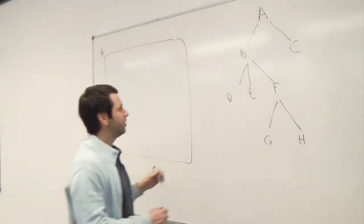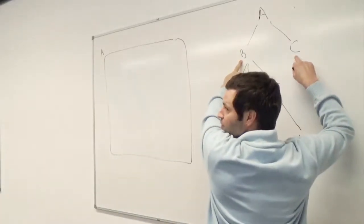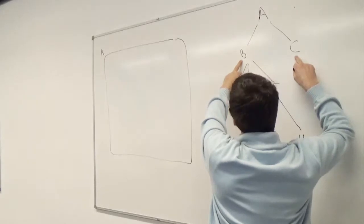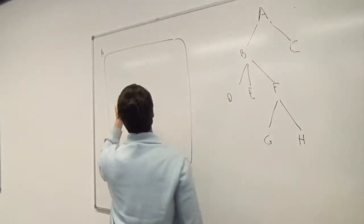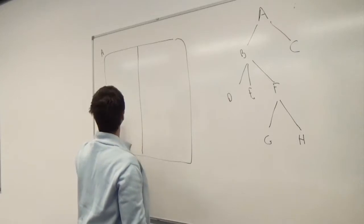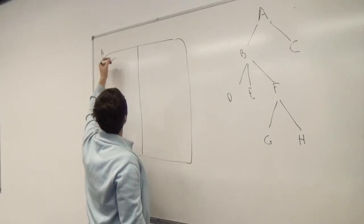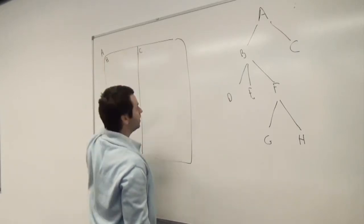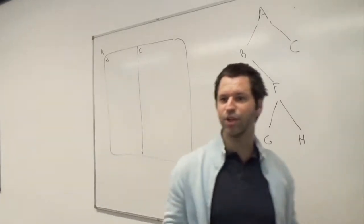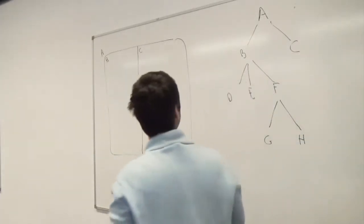And then it's subdivided by the number of children. So there are two children here. So I'm just going to subdivide it — B and C. And recurse. That's it, basically.